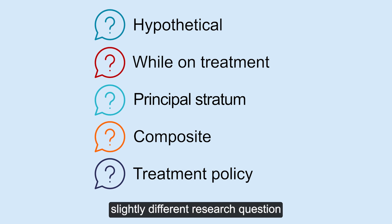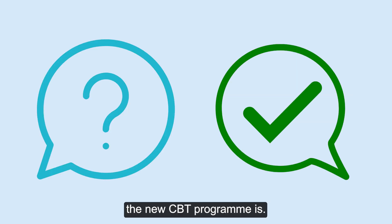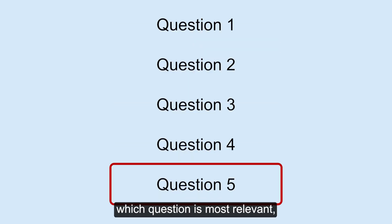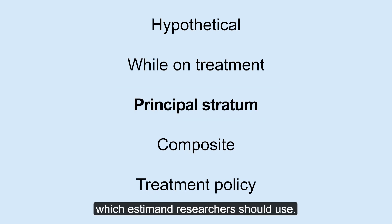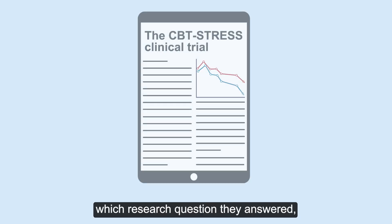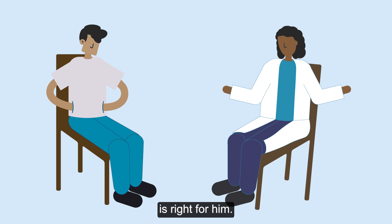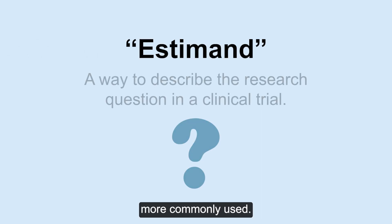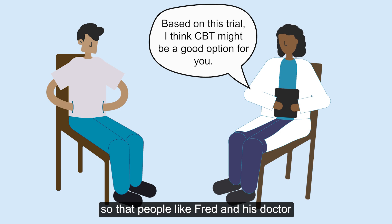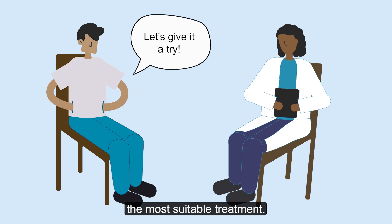Each strategy answers a slightly different research question and may lead to a slightly different conclusion about how effective the new CBT programme is. It's important to decide at the trial outset which question is most relevant and therefore which estimand researchers should use. If the researchers running the CBT Stress Trial hadn't made it clear which research question they answered, it may be difficult for Fred and his doctor to understand whether the CBT programme is right for him. This is why estimands are becoming more commonly used — they are a way of describing the research question so that people like Fred and his doctor can understand what trial results mean for them and make better decisions about the most suitable treatment.